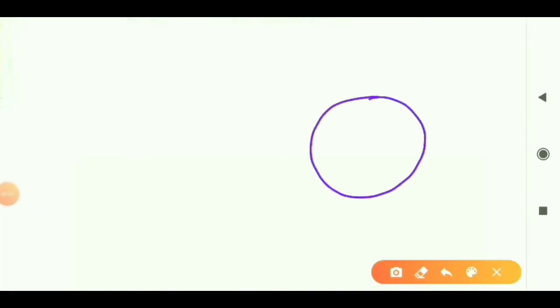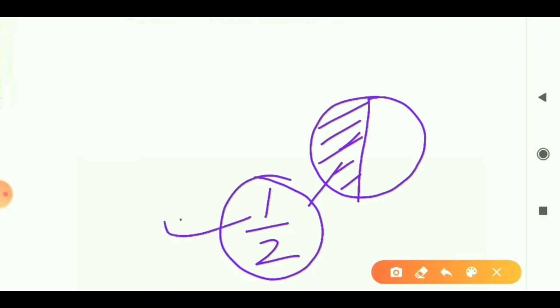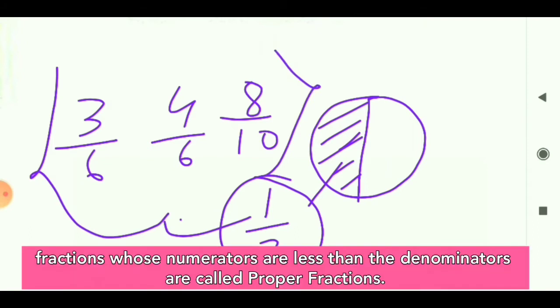Let me explain with a picture. Here we take one circle — it is a whole, which means one. Now I divide this whole circle into two equal parts. You can see that the colored part is one upon two, and this one upon two is less than the whole part. So we can say that one upon two is a proper fraction. Similarly, 3 upon 6, 4 upon 6, and 8 upon 10 are all examples of proper fractions.